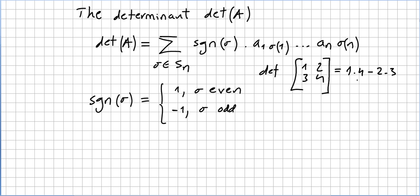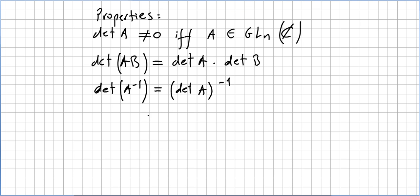I just remind you that the sign function is a function where its value is 1 if sigma is even and minus 1 if sigma is odd. Okay, some key properties of the determinants, they are very well known.